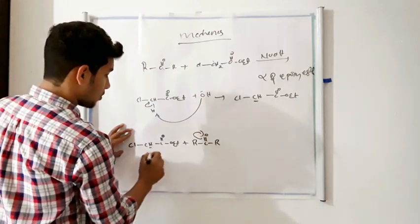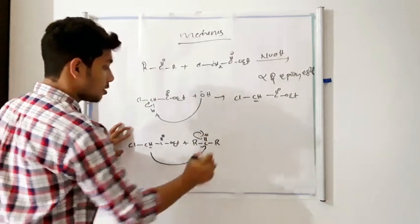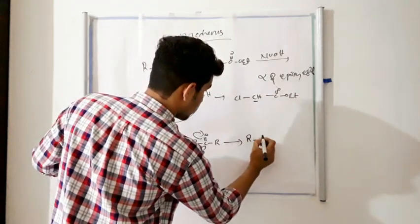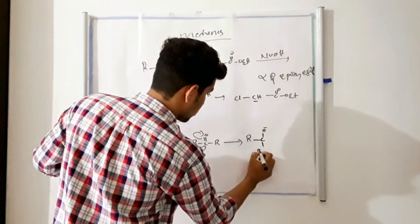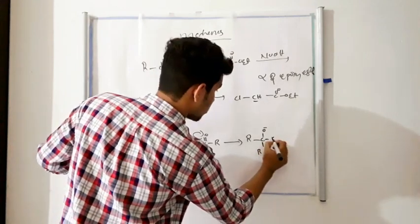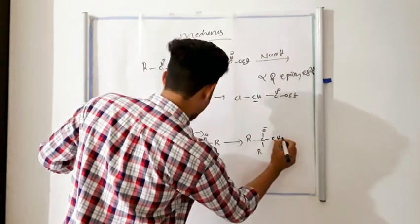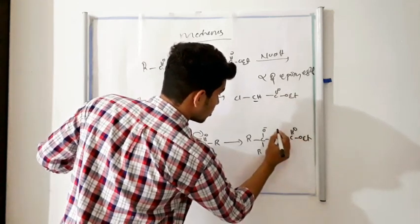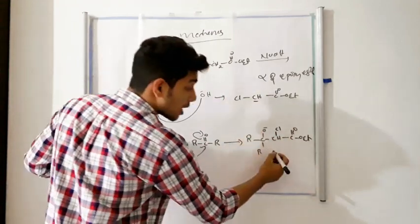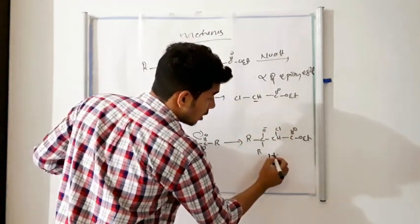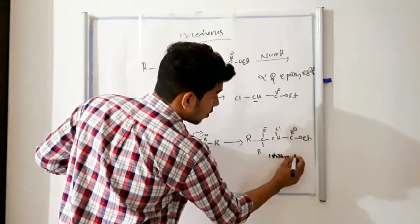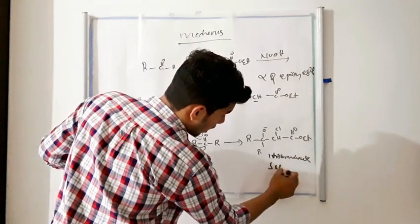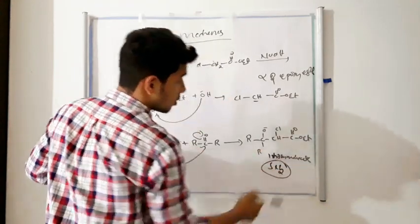This carbanion attacks the carbonyl compound. Oxygen is more electronegative than carbon, so the bond shifts towards oxygen, generating a carbon carbanion that attacks the carbonyl carbon. There is then a possible intramolecular attraction, and an SN2 reaction occurs.